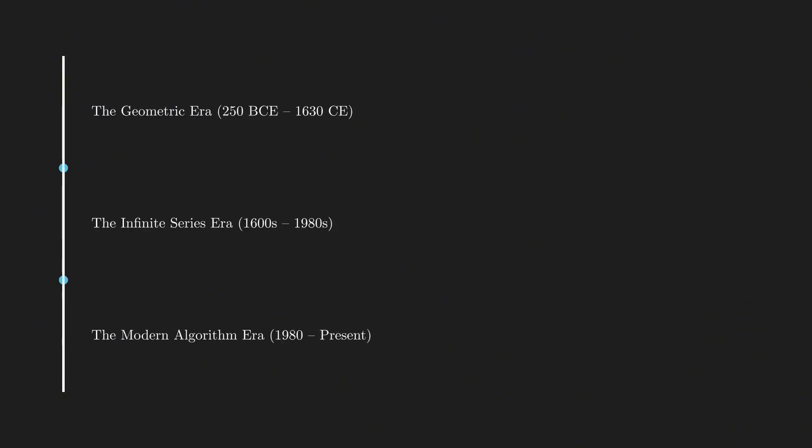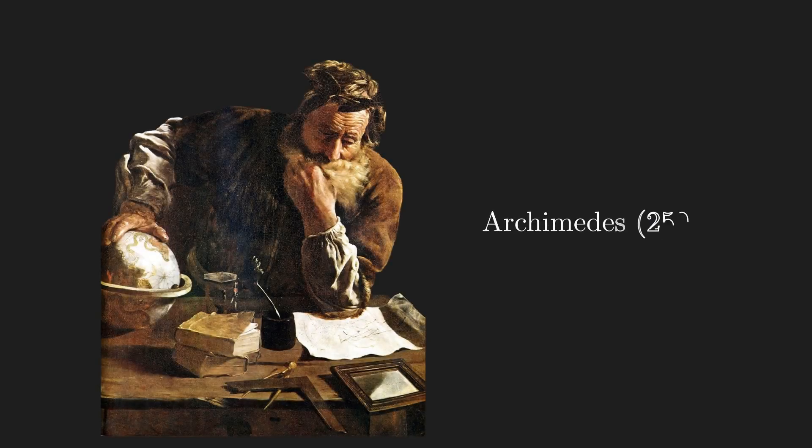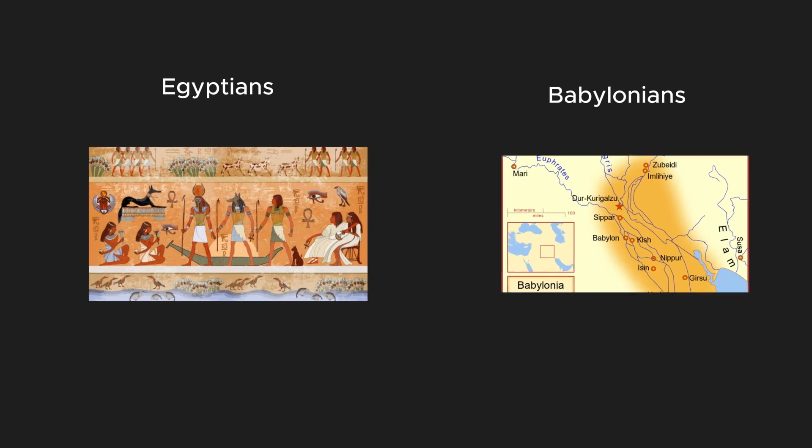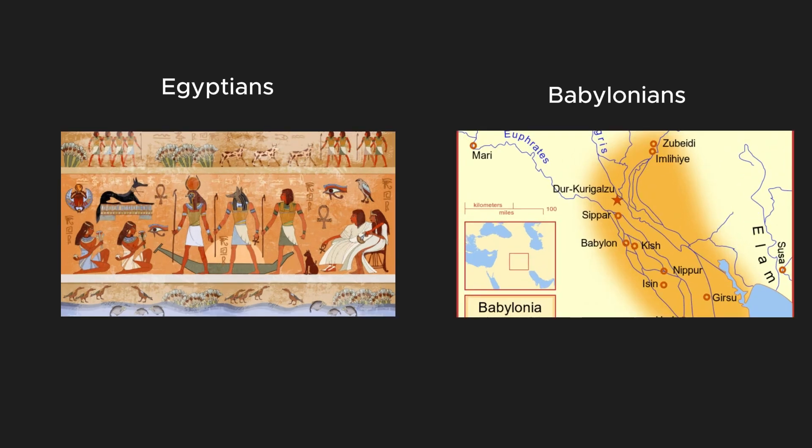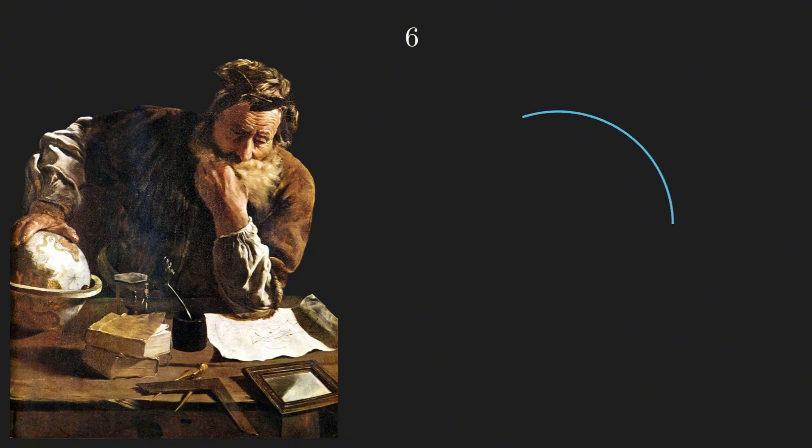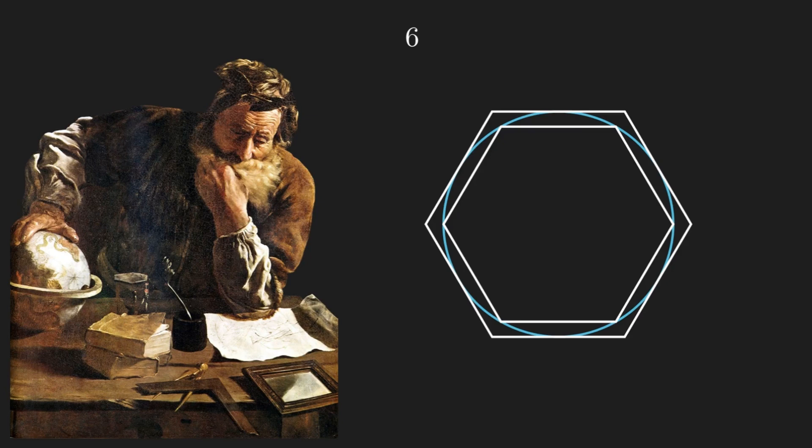The first breakthrough in computing Pi came from Archimedes around 250 BC. Before Archimedes, civilizations such as Babylonians and Egyptians approximated Pi through direct measurements. However, these methods were experimental and they lacked precision. Archimedes took a completely different approach. Instead of measuring circles, he trapped circles between two polygons, one inside and one outside. And he measured the polygon length.